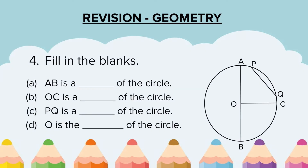Question 4: Fill in the blanks. A figure is given to us and we have to basically label the parts. AB is a dash of the circle. OC is a dash of the circle. PQ is a dash of the circle. O is the dash of the circle.